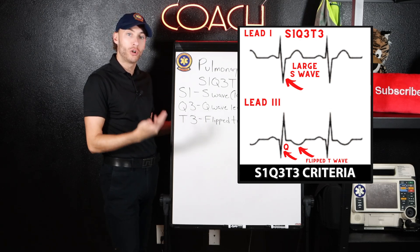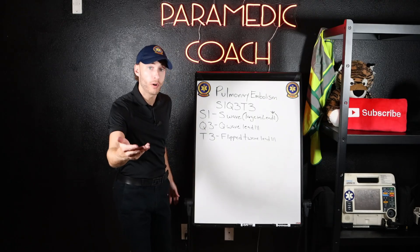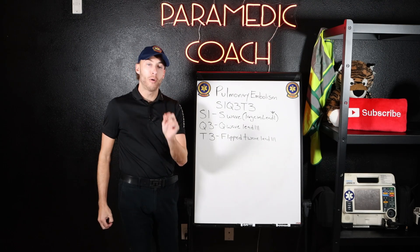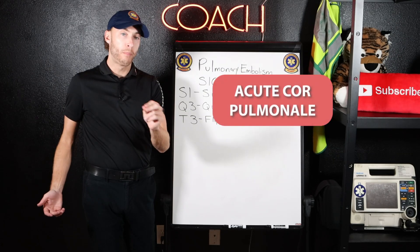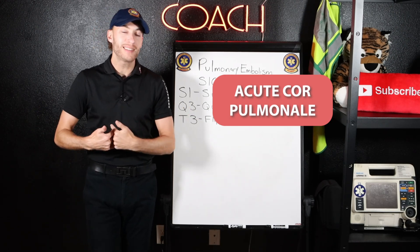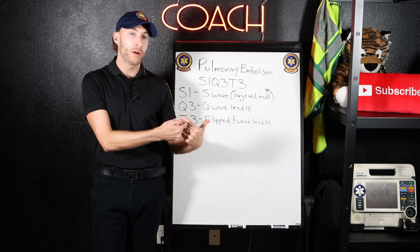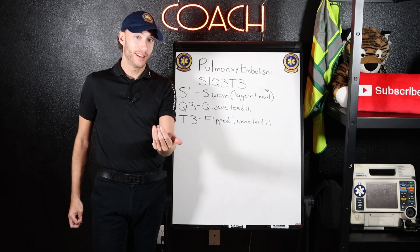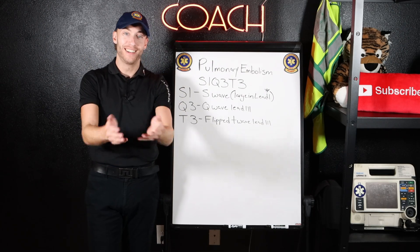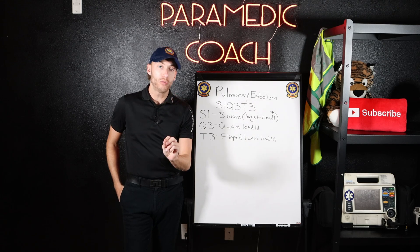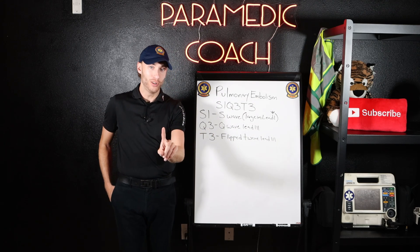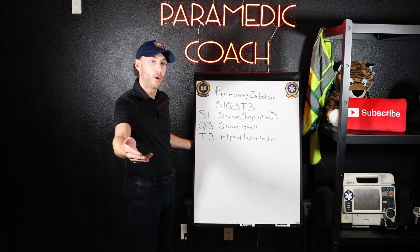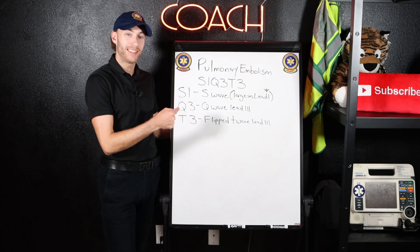The presence of flipped T-waves could mean pulmonary embolism. A massive pulmonary embolism can cause acute cor pulmonale — a resistance of blood flow through the pulmonary artery — causing blood to back up, resulting in right heart failure. Acute cor pulmonale is associated with the S1Q3T3 finding, caused by the pulmonary artery being blocked and creating that resistance.